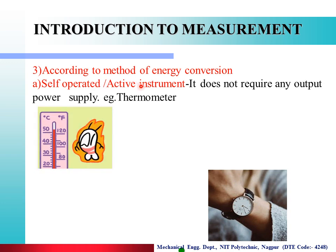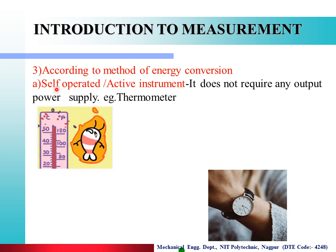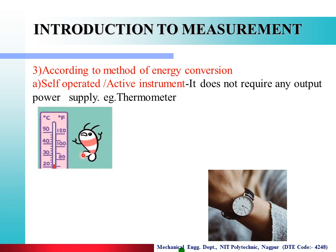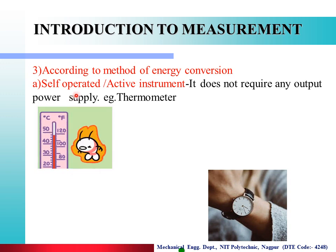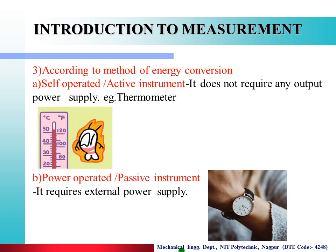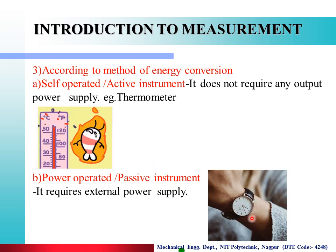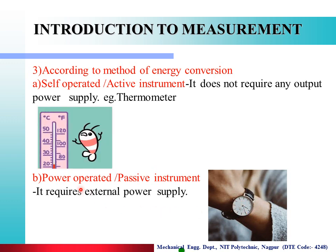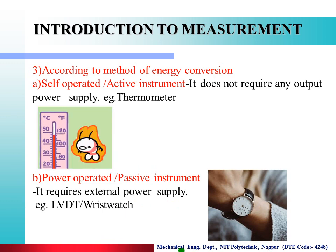Next, according to the method of energy conversion: the first type is self-operated or active instrument — it does not require any external power supply. Example: a thermometer, which operates without an outer power source. The second type is power-operated or passive instrument. Example: a wristwatch — to operate it a battery must be inserted. That is called a power-operated or passive instrument. Another example is LVDT.